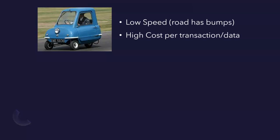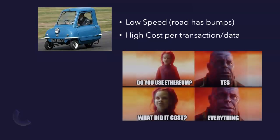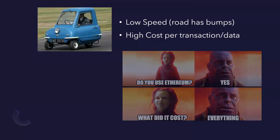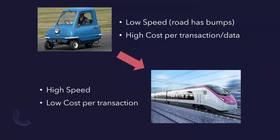Imagine the road has a few bumps as well. The implications are: low speed, and most importantly, high cost per transaction — high cost per transporting that passenger, which is the data. That is where you need a proper track. Instead of a normal road, you need a highway or a bullet train — you need a faster turnaround for this data to transfer from point A to point B.